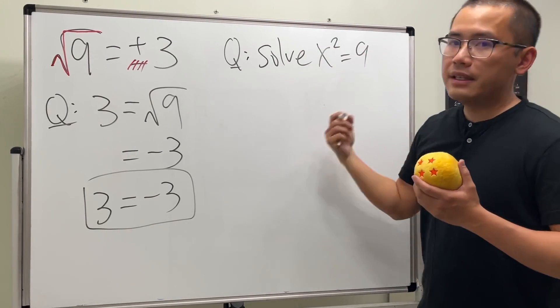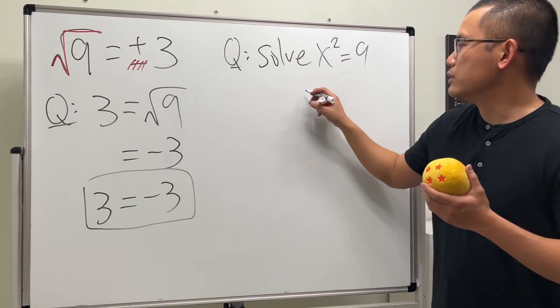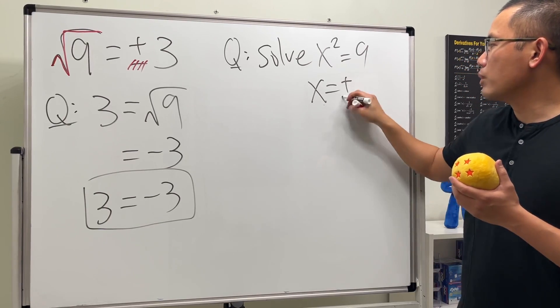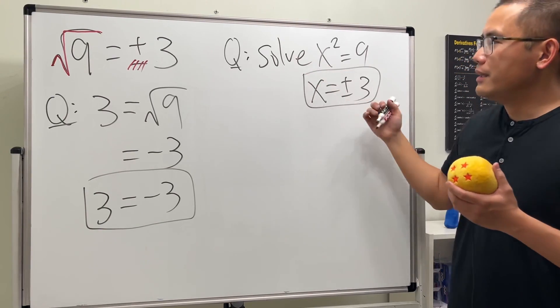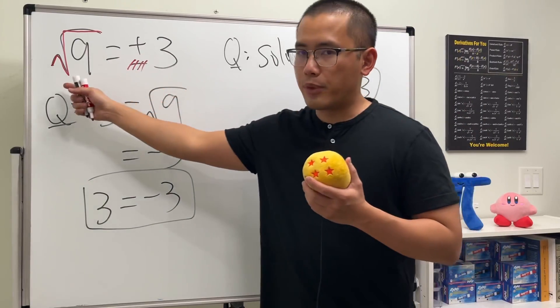squared equals nine, then in this case we can have two solutions. The solutions are x equals plus or minus three. So when solving equations, we have two answers, but when we have an operation, it's just one answer.